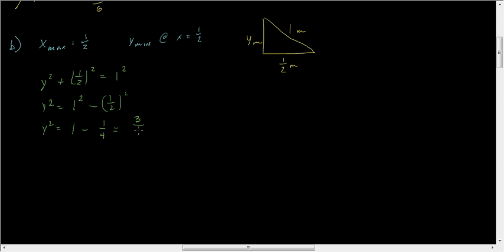If we take the square root of both sides, then we have y = √(3/4), which is just √3/2.